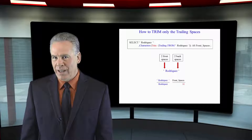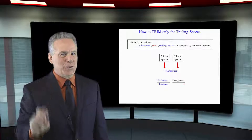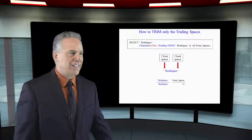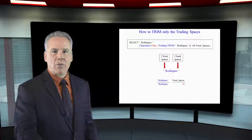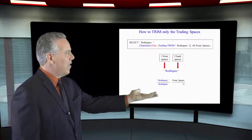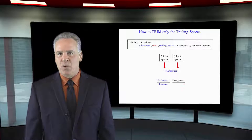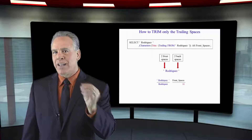I took the name Rodriguez and put two spaces in the front and two spaces in the back. Then I said SELECT Rodriguez, CHARACTERS, TRIM TRAILING FROM Rodriguez. Now I'm going to have 11. It trimmed the trailing spaces from Rodriguez — got rid of the two spaces at the end — and passed that trim to the CHARACTERS command, which counted the first two spaces and then the nine characters of Rodriguez for a total character count.